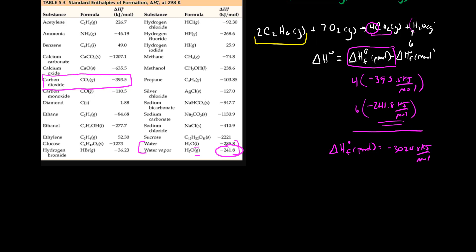So from our table we can find C2H6, that's ethane. It's a gas so we're in the right phase. We see that our value is negative 84.68. So we have two times negative 84.68 kilojoules per mole. And this was for our C2H6.